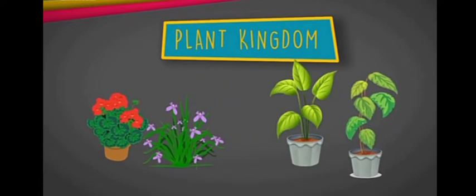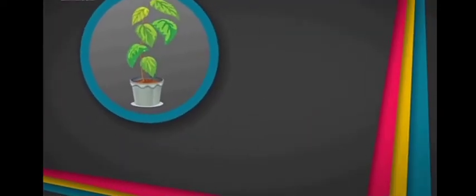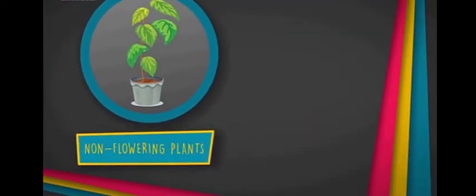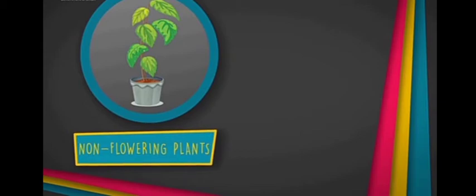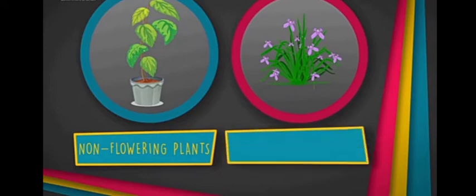Number one: flowering plants. Number two: non-flowering plants. Non-flowering plants do not produce flowers. Flowering plants produce bright, colorful flowers.